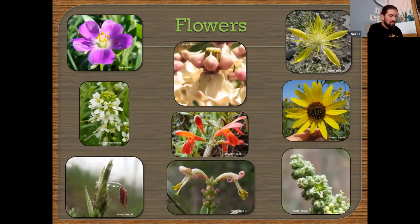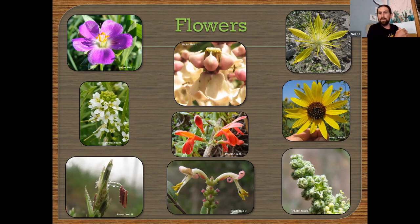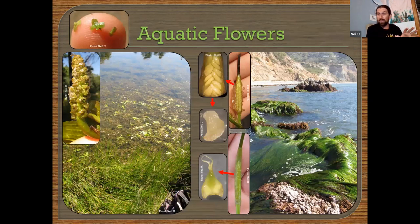Moving on to flowers — they're diverse. Plants have made so many shapes and forms in flowers. The colors, the shapes, the patterns — angiosperms do it really well. This is just a snippet of some of the flowers out there. We're going to talk about the basic parts of a flower to get familiar, which helps with identification. Also worth noting — there are aquatic flowers. Don't forget about water environments: there are definitely flowering plants in water environments.